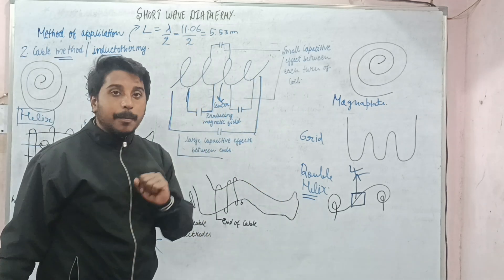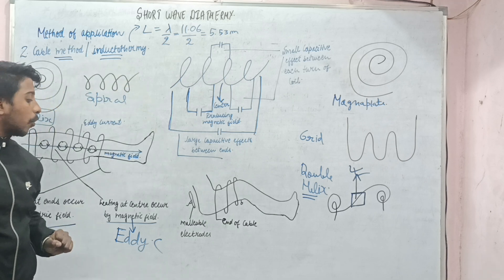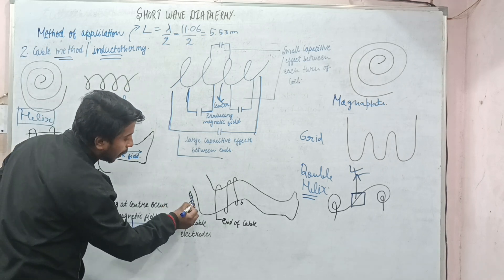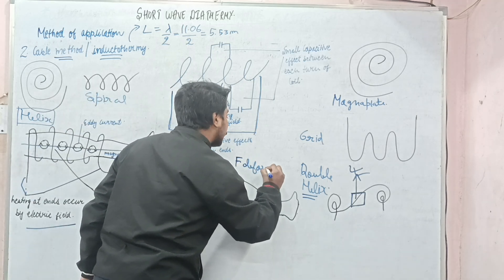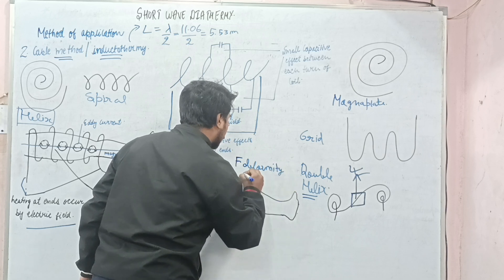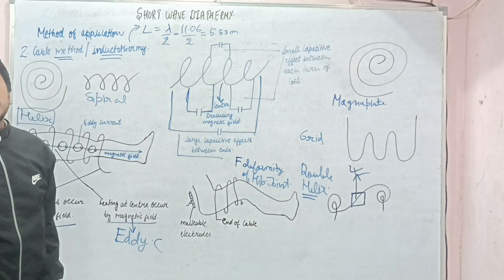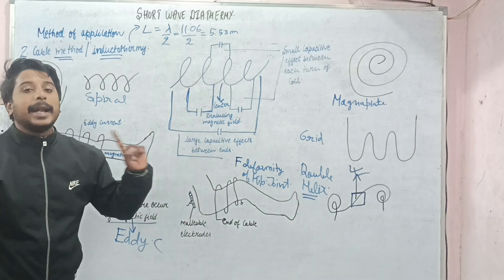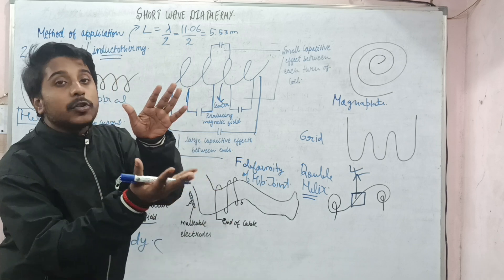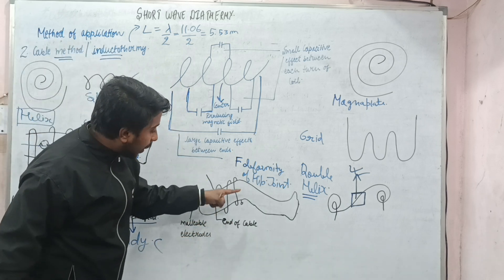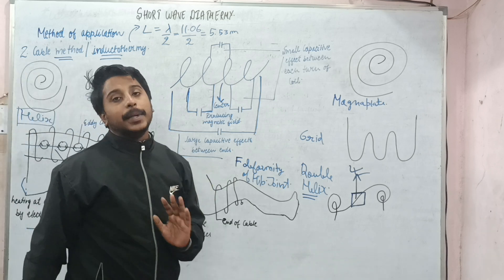Another important point: the inductothermic cable can also be used in combination with a paired electrode. This is mostly used for flexion deformity of the hip joint, which makes it difficult to achieve anterior-posterior placement. So, the inductothermic cable is placed anteriorly and at the back we use the pad electrode. It can therefore be used in combination.